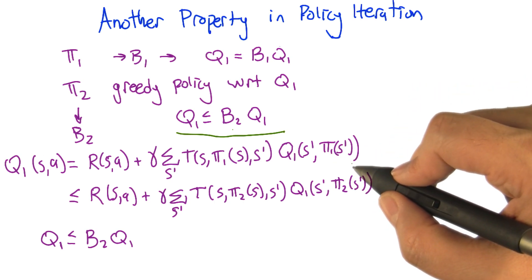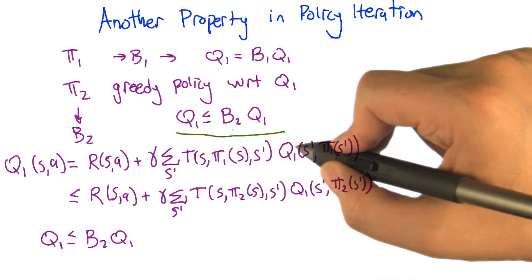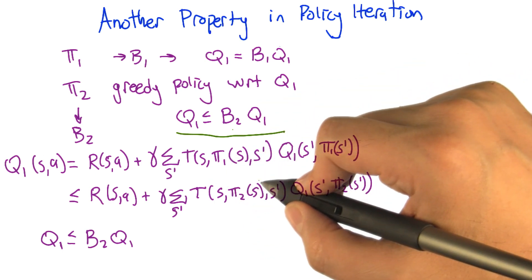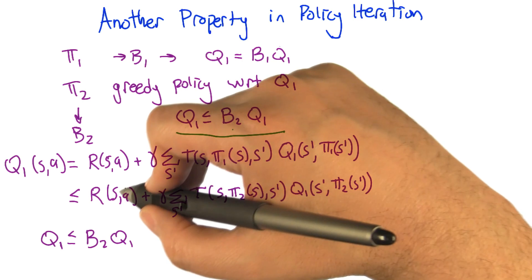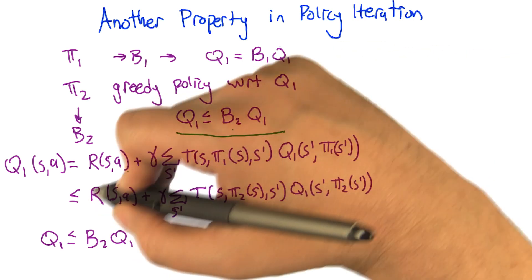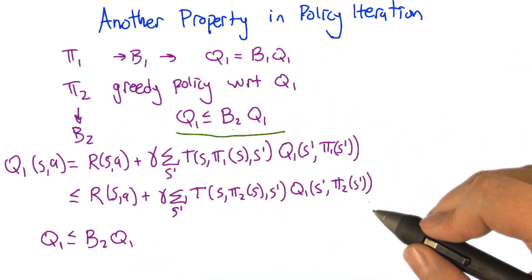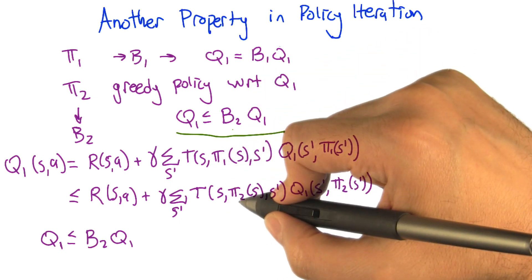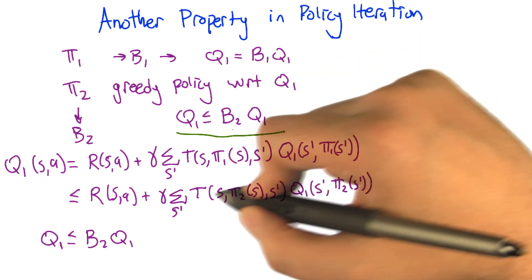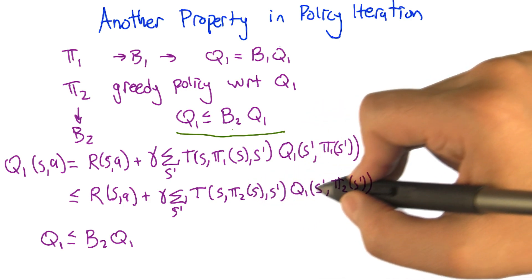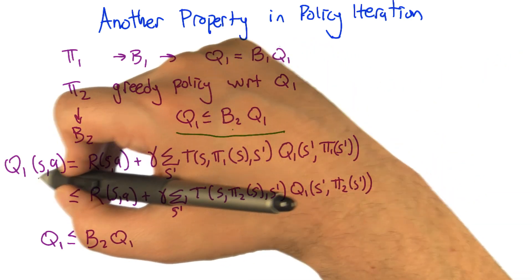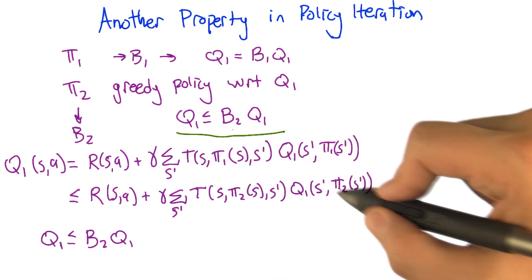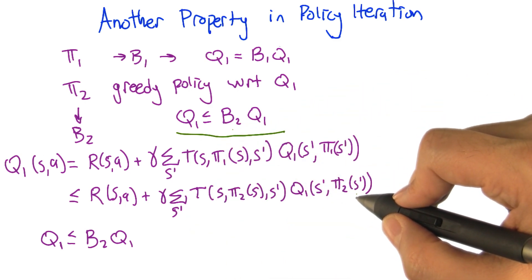Think about what Pi2 is — we can substitute Pi2 for Pi1 here, but Pi2 is the greedy policy with respect to this. In other words, it is the policy that causes this exact quantity to be maximized. That's what the greedy policy does. At every state, either we're going to do no worse than we did with Pi1, or we might actually do better by switching to Pi2. So at each state-action pair, we're doing no worse by doing one Bellman backup with B2 on Q1.